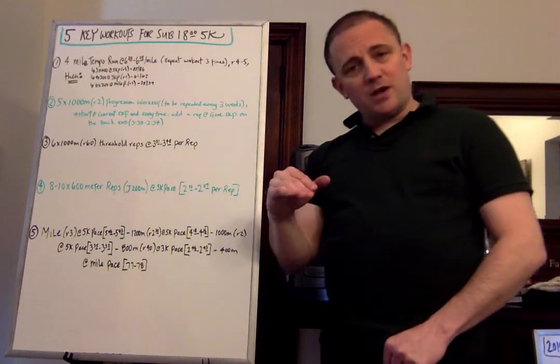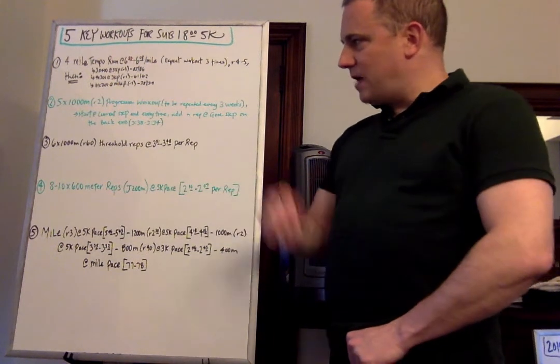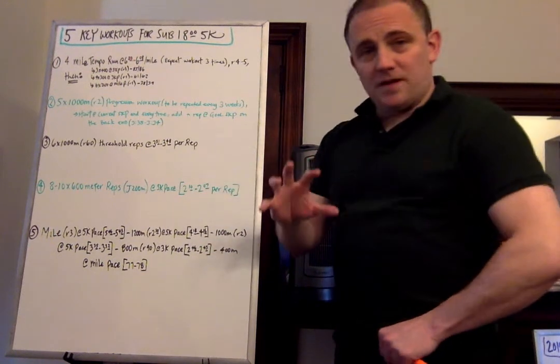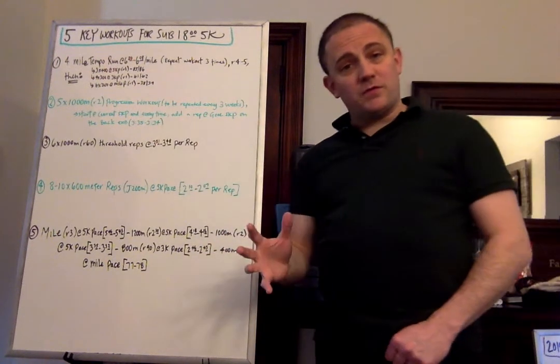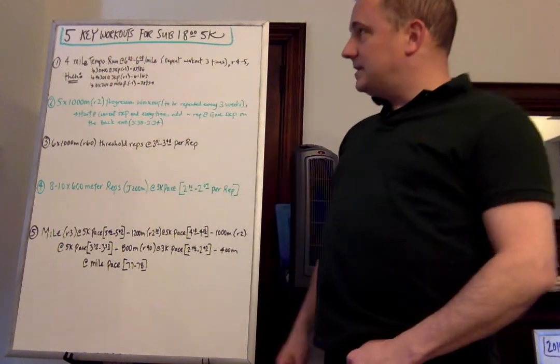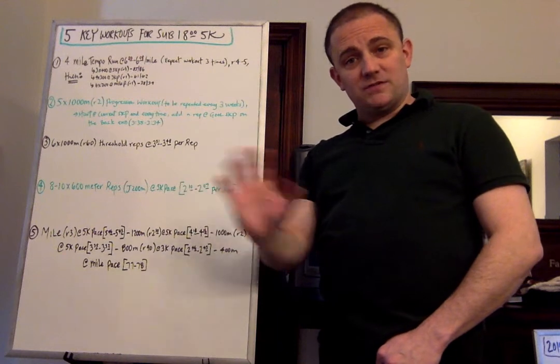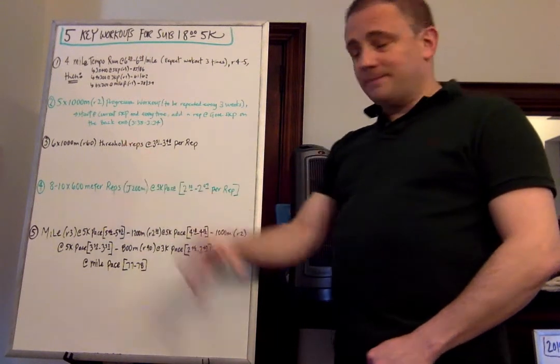Each time you do it is a two-minute recovery after each rep. Gradually get used to that goal 5K pace, and in this case it's 3:35 to 3:34 per rep. Slightly faster than sub-18. 18 minutes on the nose is 3:36 per thousand. You want to train slightly faster, give yourself a margin of error on the back end.